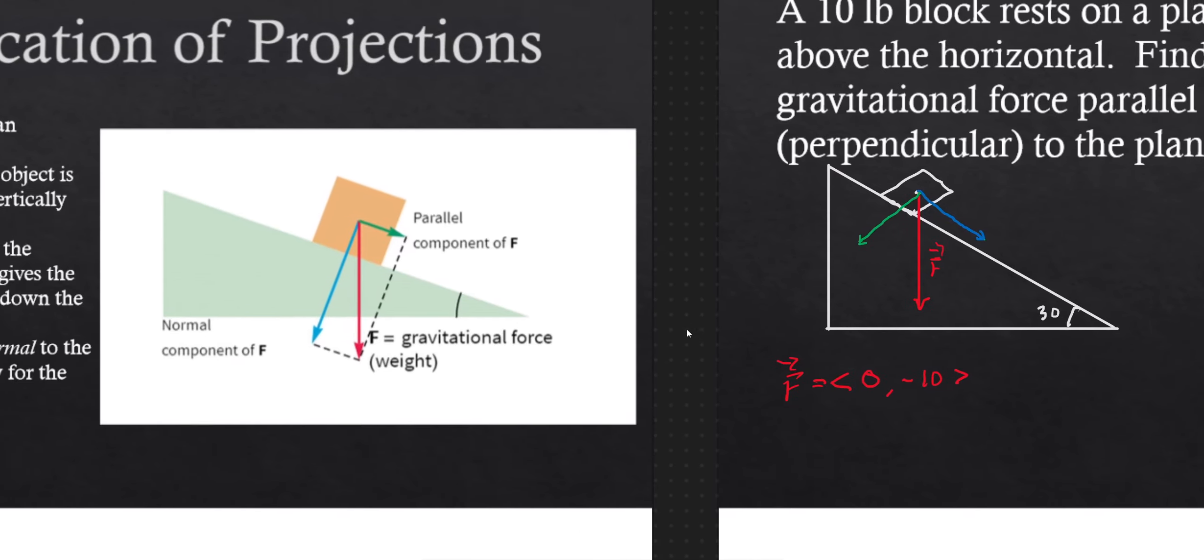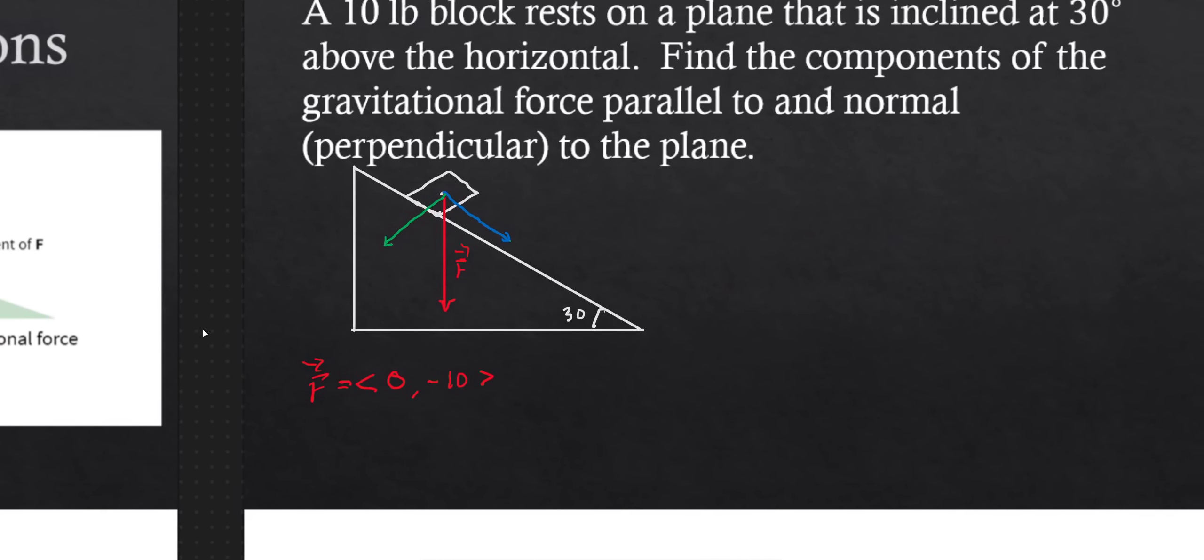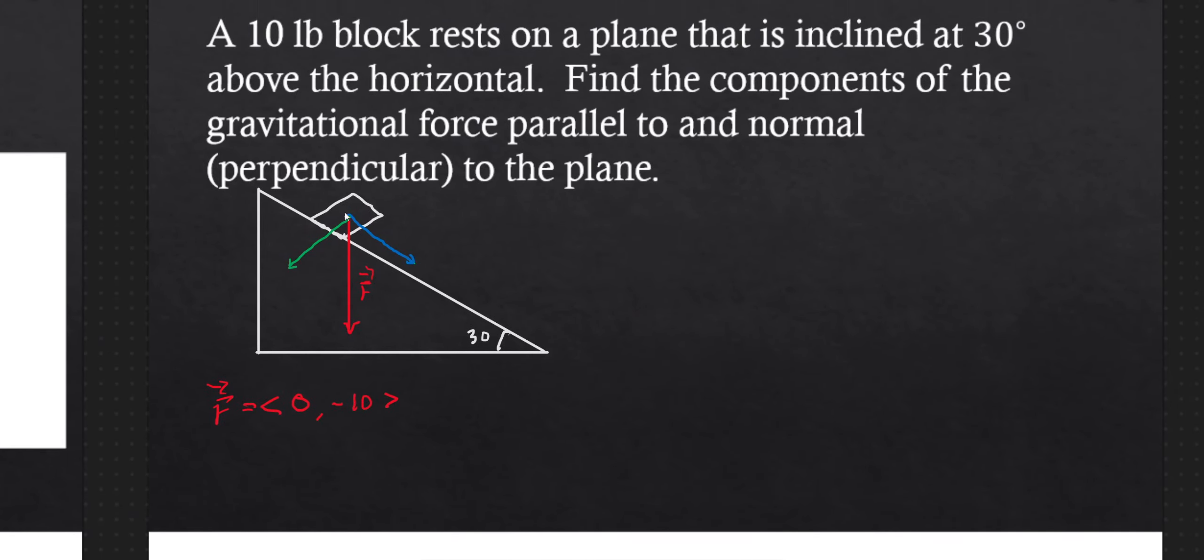So these two vectors kind of contribute to this. So maybe I should give names to these. We have names. We have parallel component and normal component. Let's call this the parallel component to the plane.